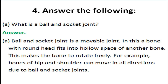Question 1: what is a ball and socket joint? A ball and socket joint is a movable joint in which a bone with a round head fits into a hollow space of another bone, making the bone rotate freely. For example, the bones of the hip and shoulder can move in all directions due to the ball and socket joint.